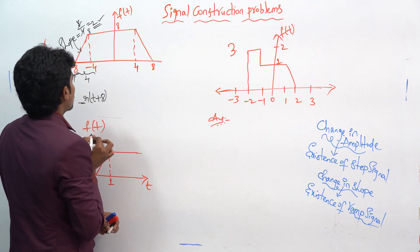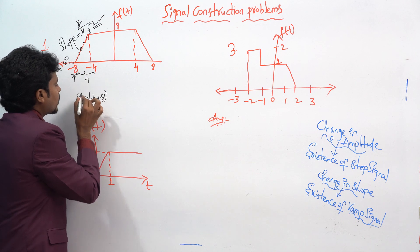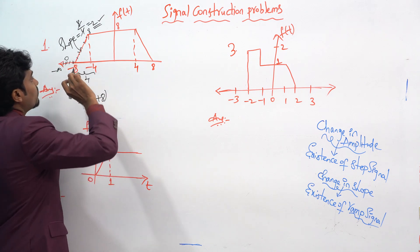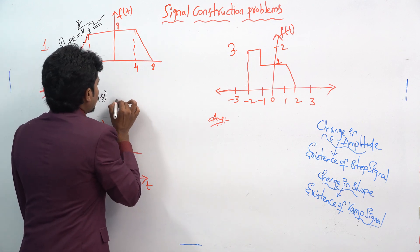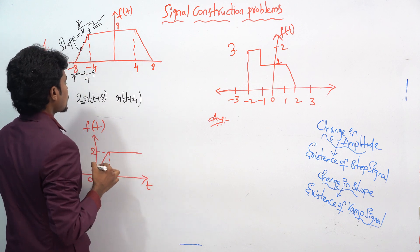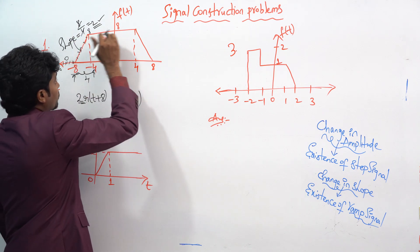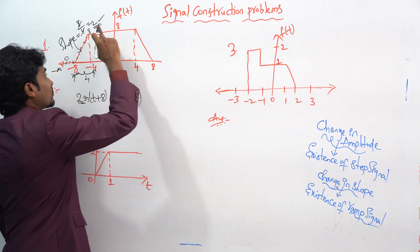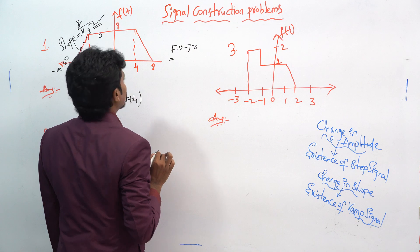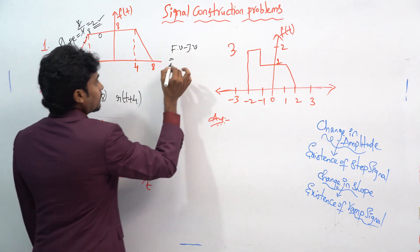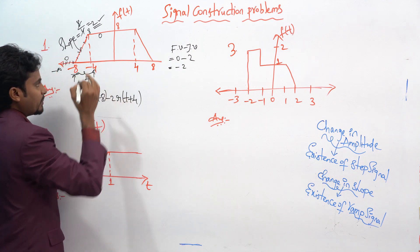Whether it is a positive or negative slope — here you can observe this is an increasing rate, so whenever you see increasing, that is a positive slope. You represent it as 2·r(t + 8). Whenever there is also a change at t = −4, that gives r(t + 4). The final value minus initial value equals 0 minus 2, which is minus 2, giving −2·r(t + 4).